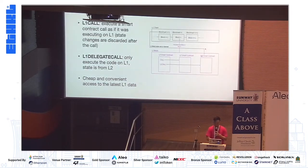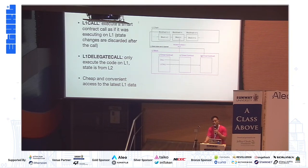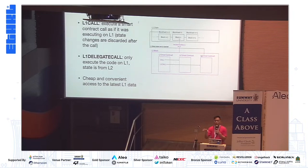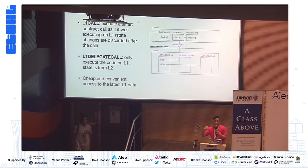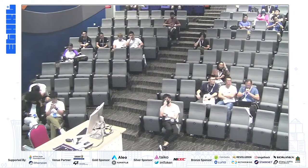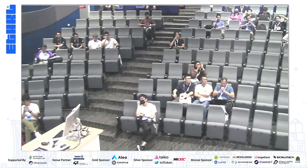Another way is to scrap the entire bridging idea altogether and use an L1 call or L1 delegate call. The idea is that developers won't deploy any smart contracts on the L2 — all contracts will live on L1. So your Uniswap, OpenSea, everything lives on L1, but you use L2s to submit calls or delegate calls that will be pushed onto L1. The L2s are basically just communicating the state change that will be reflected onto L1.